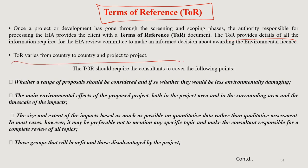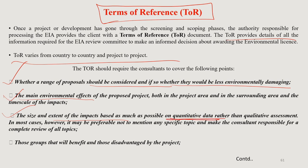The TOR will provide the details of all information required for the EIA review committee to make an informed decision about whether to award the environmental approval or not. TOR varies from country to country and project to project. It should address whether a range of proposals should be considered and if so whether they would be less environmentally damaging, and the main environmental impacts of the proposed project — both in the project area and surrounding area — including the timescale and spatial extent of impacts based on quantitative data.